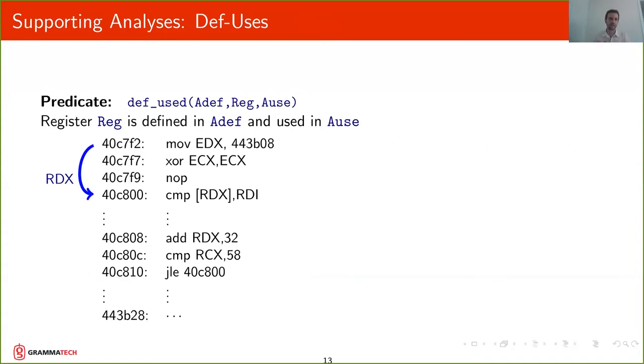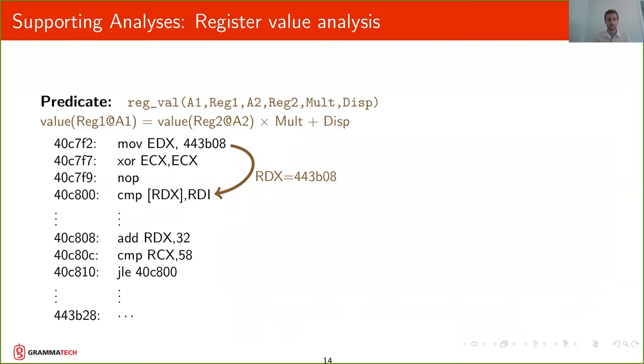So what are the analyses that we have? We have a def-use analysis that is going to generate predicates that tell us that a register is defined at some address and then is used at some other address. In this case, the register RDX is defined at the first instruction and then is used in this later compare instruction.